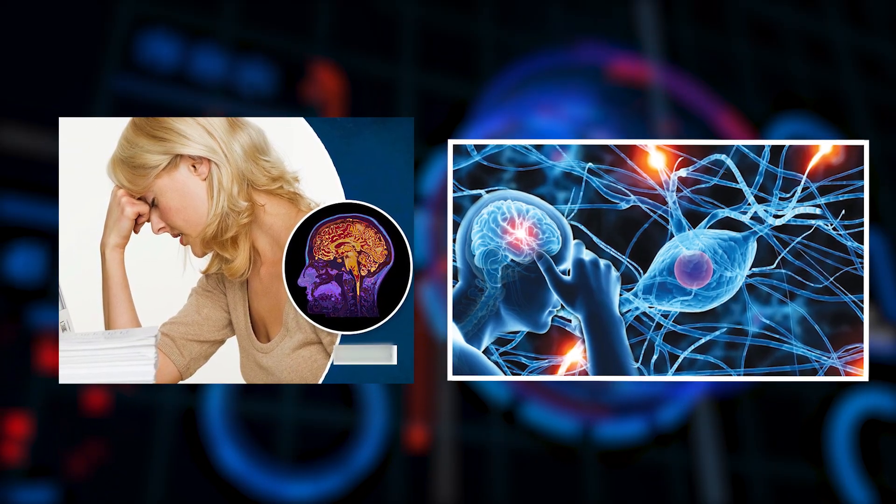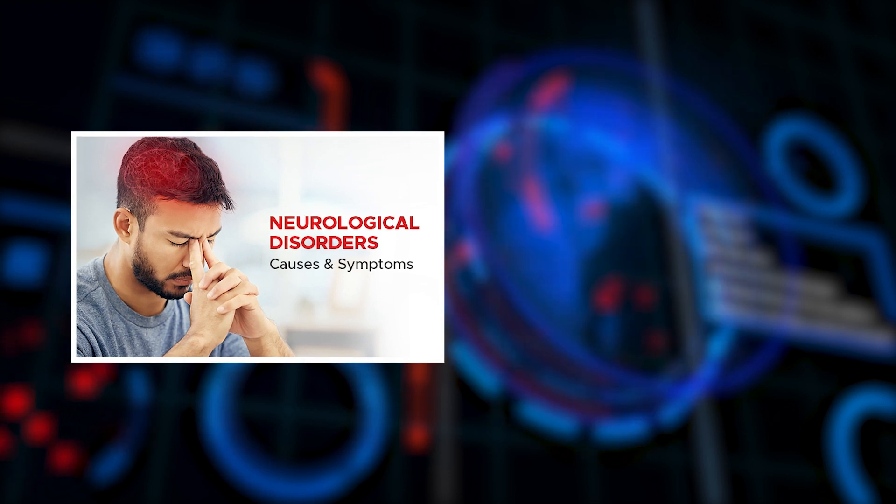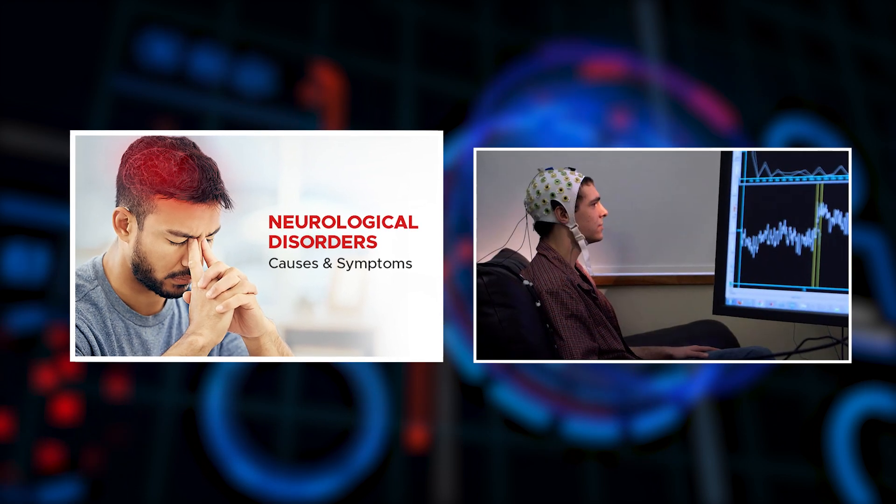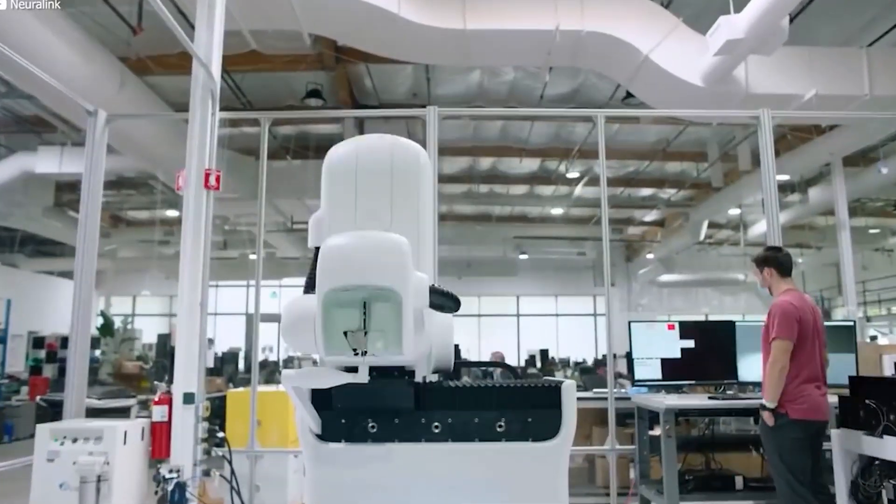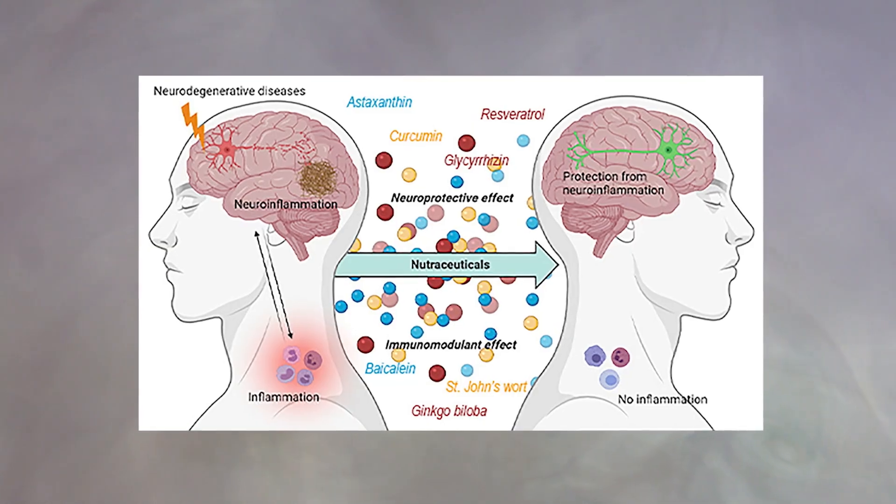What could be the potential impact on neurological disorders? Neuralink's foray into human trials offers hope to millions around the world suffering from neurological disorders. By directly interfacing with the brain, the technology has the potential to restore lost functionalities, paving the way for significant advancements in treating conditions such as paralysis, epilepsy, and even neurodegenerative diseases.